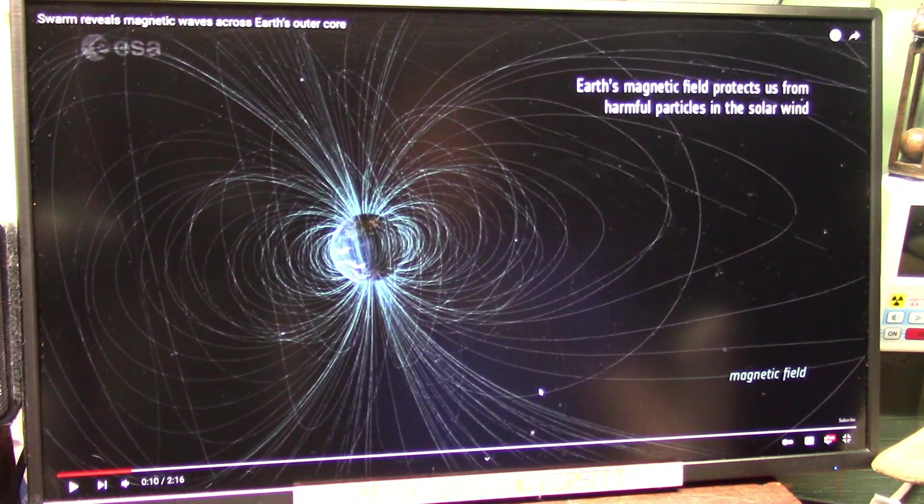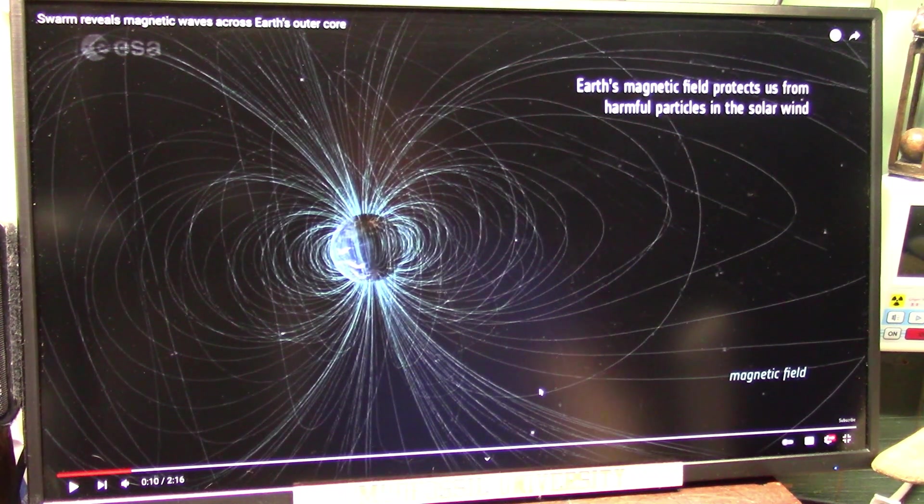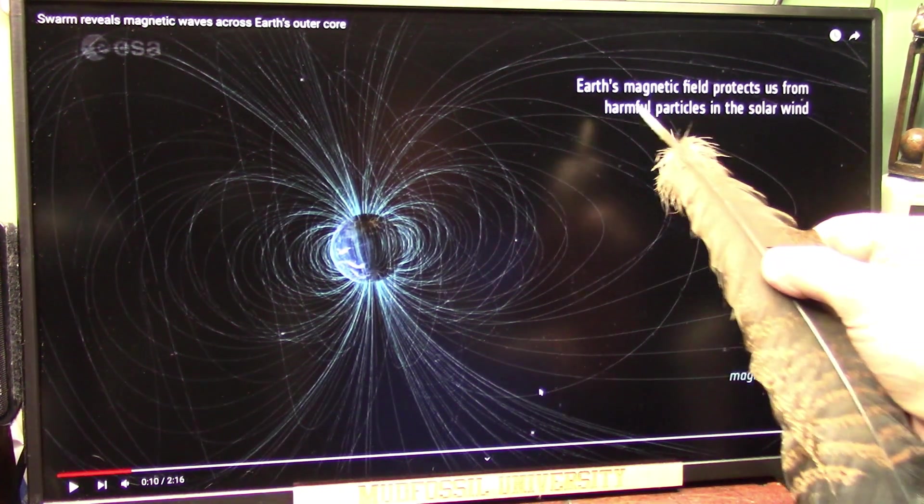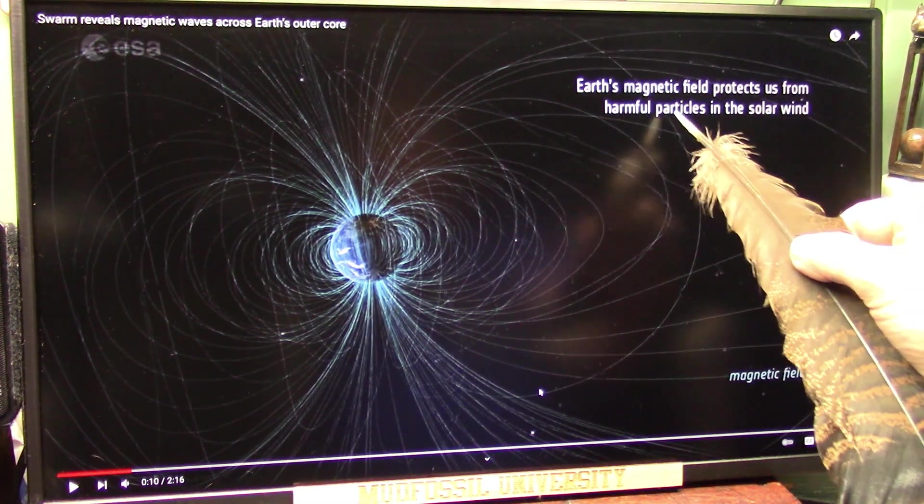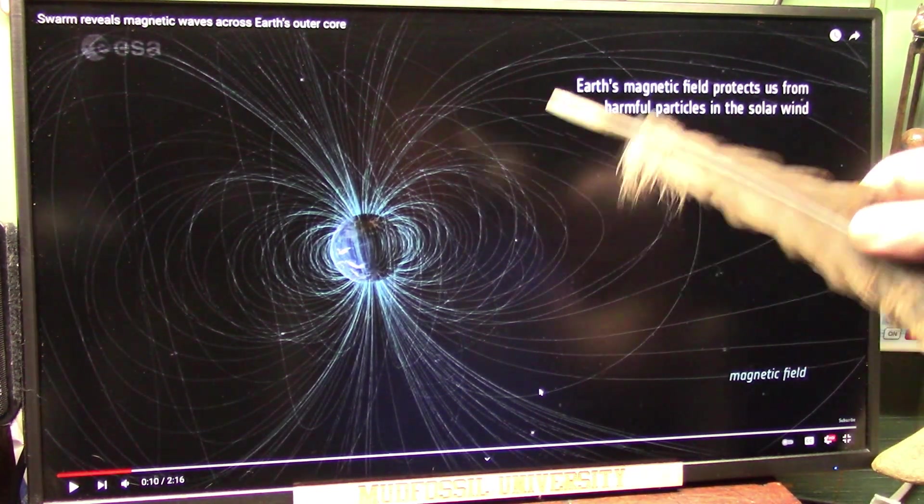Okay, my friends, I'm going to show you something right now that is very hard to explain. They're talking about Earth's magnetic field. The magnetic field protects us from harmful particles in solar wind.